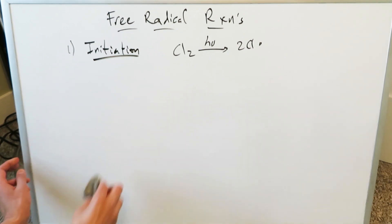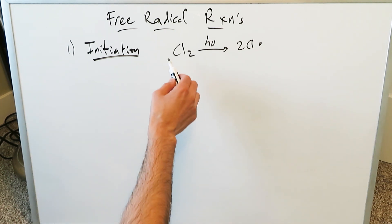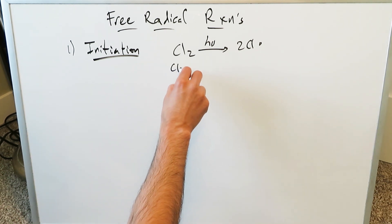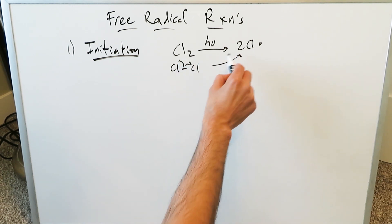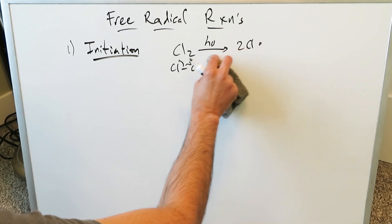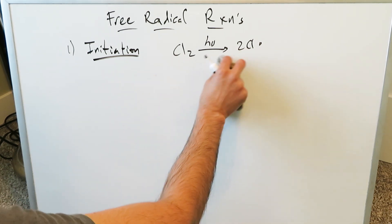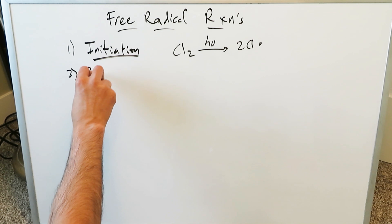Your initiation step is that step which generates your first radical. Here I've generated two chlorine radicals — because you were looking at chlorine-chlorine, it pulled one electron to each and you generated two chlorine radicals. The next step is the propagation step, where the chlorine radicals will affect other compounds and start continuing and creating new reactions. That will be your propagation step.